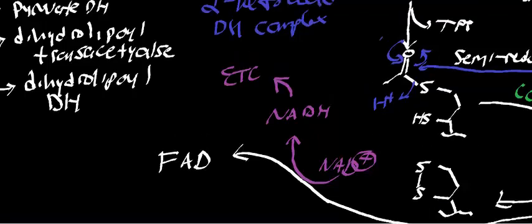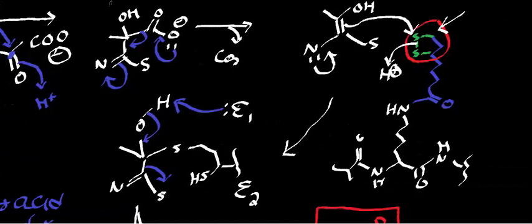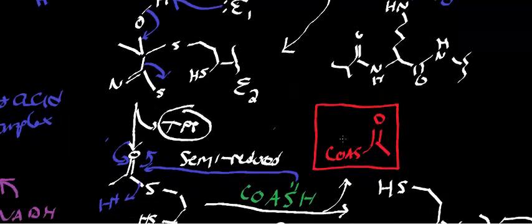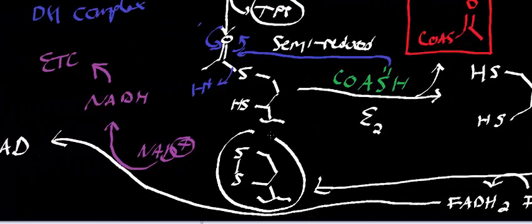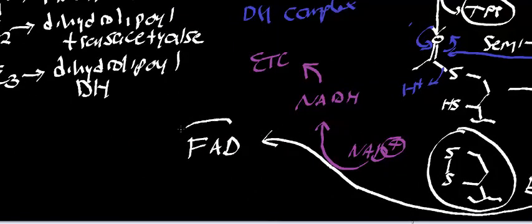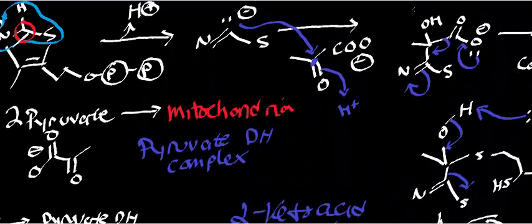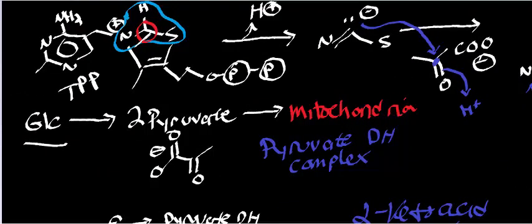So what have we seen? We regenerated thiamine pyrophosphate in the early steps, we regenerated the dihydrolipoyl group, and by dihydrolipoyl dehydrogenase we regenerate FAD. Remember, by definition an enzyme — and really any catalyst — must regenerate itself at the end of catalysis. Ultimately, this enzyme complex produces acetyl-CoA, releases carbon dioxide, and generates NADH.